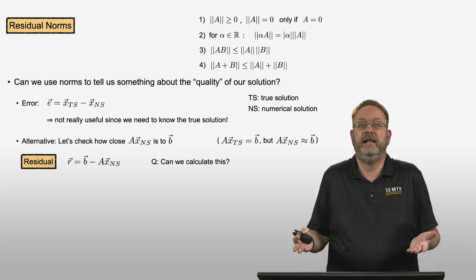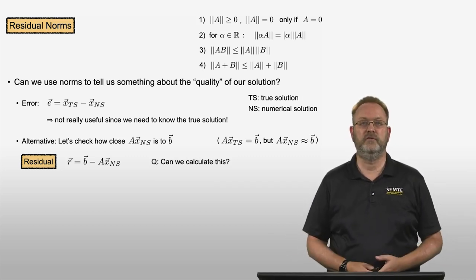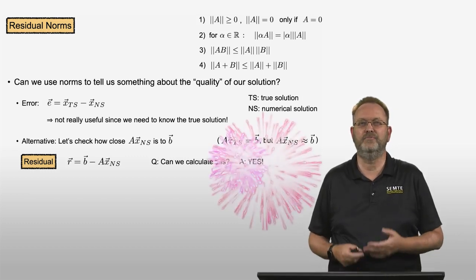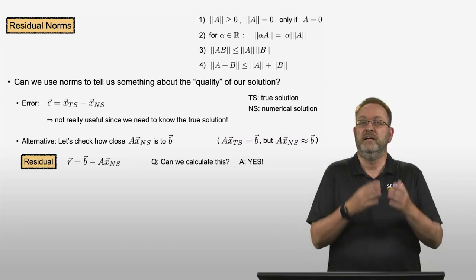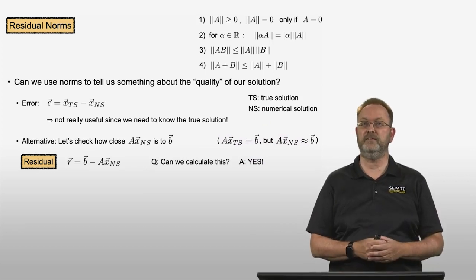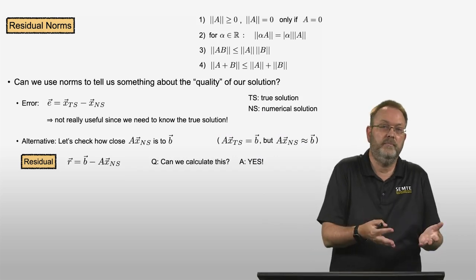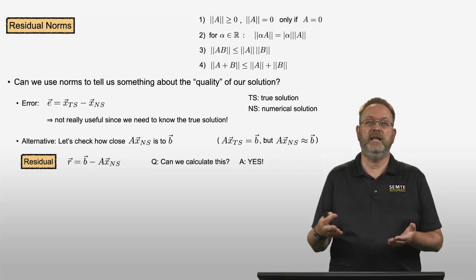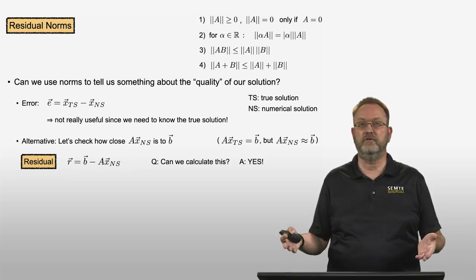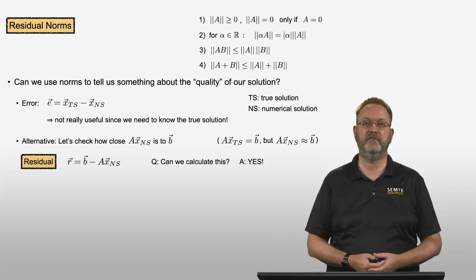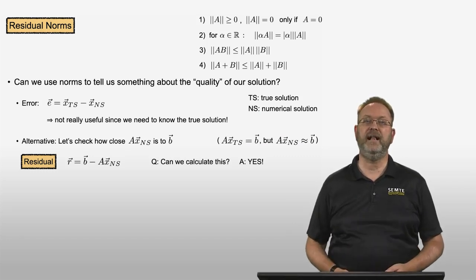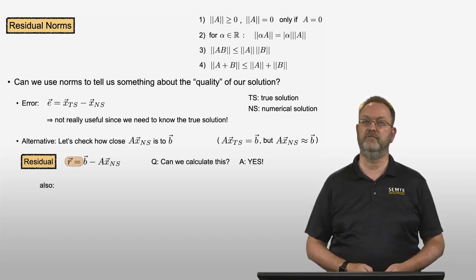Now can we calculate this quantity, the residual vector? It turns out yes we can, because we have everything in this equation. The right hand side B is given to us. We know the matrix A because we know the equations we're trying to solve, and we will have calculated with our Gauss-Jordan algorithm a numerical solution vector. So unlike the error vector, we can actually calculate the residual vector.